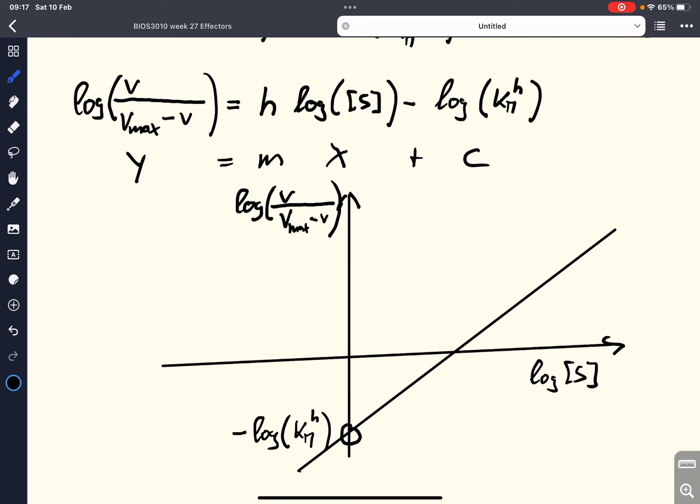The more interesting part is the gradient of this equation and of this line. So, this gradient here, because this gradient is our Hill coefficient, that is this H.